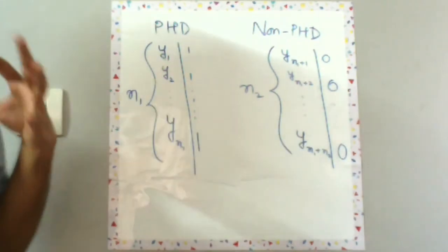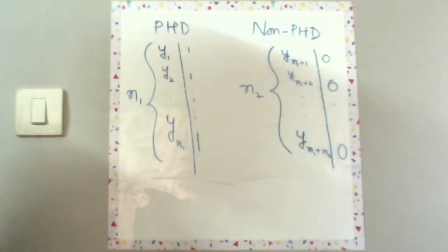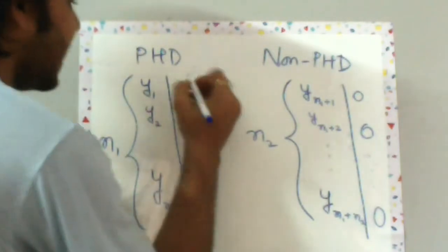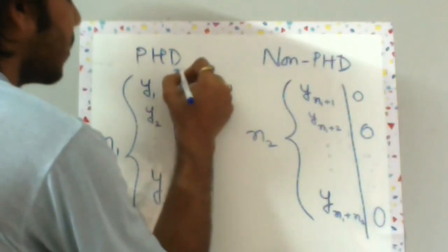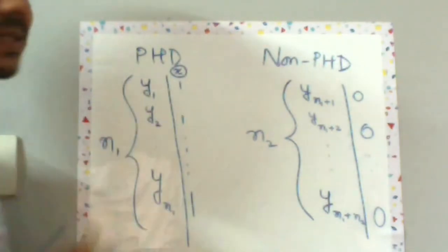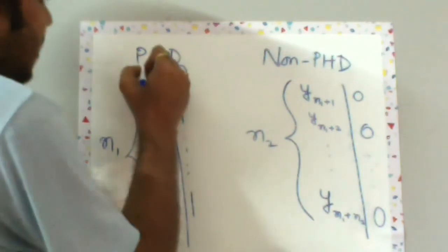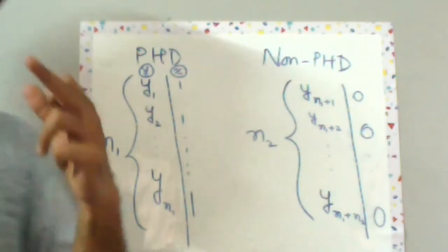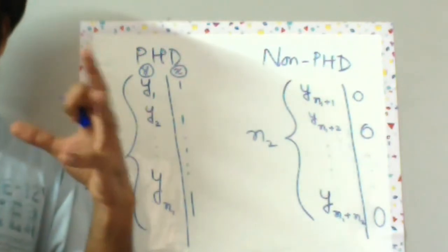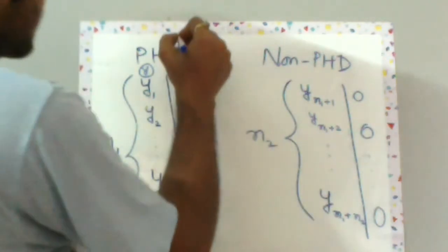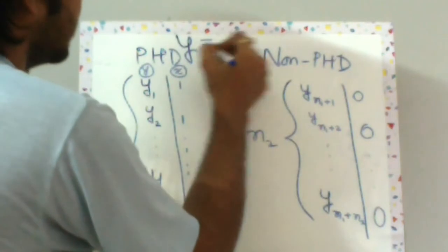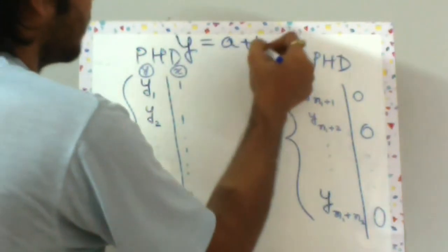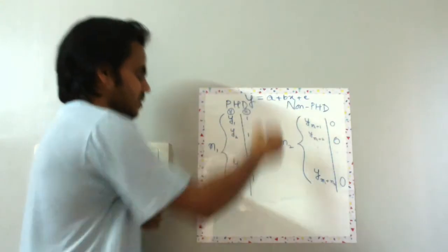Now let's give all the PhD grads one and all the non-PhD grads zero. Over here what we have derived or achieved is a kind of x and a kind of y. And why do we need this y, x? Remember the golden equation or the magical equation of econometrics.